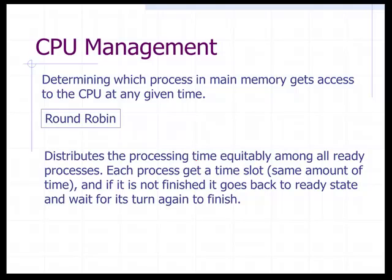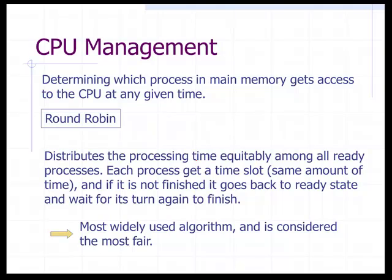The last strategy is round robin, which distributes process time equally among all ready processes. Each process gets the same time slot, and if it's not finished, it goes back to the ready state and waits for a turn again. For example, if 20 people need to speak after class, everyone gets 15 seconds — if finished, they leave; if not, they go back in line. Round robin is considered the most fair because everybody gets the same amount of access to the CPU. That ends our lecture on Lecture 7.